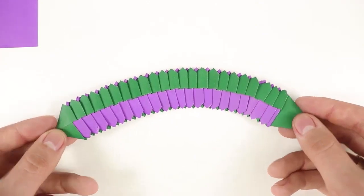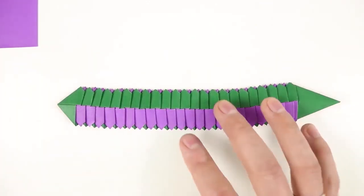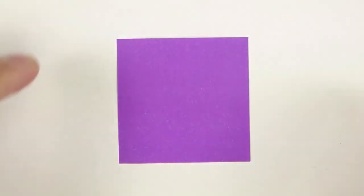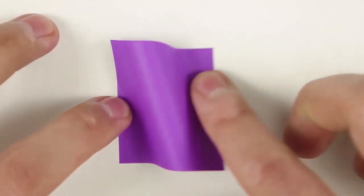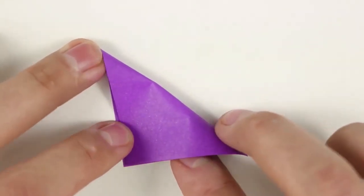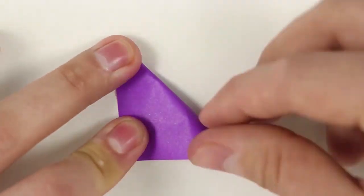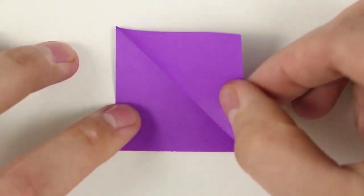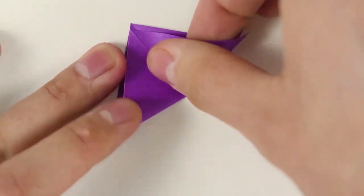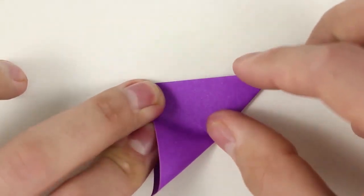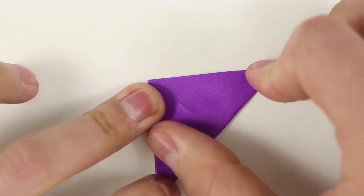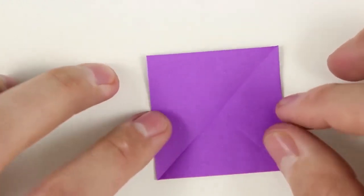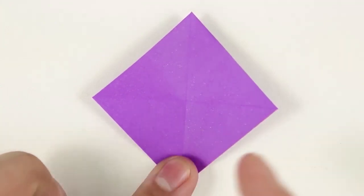Now we need to make the head, using the last square. Start by folding in half along both diagonals. Then rotate, bring the side corners to the middle.